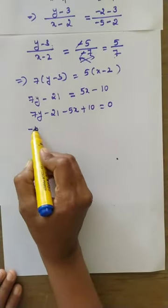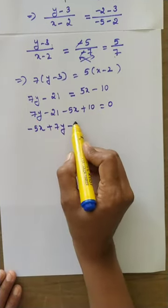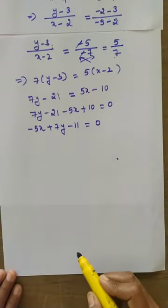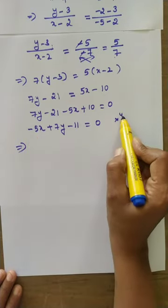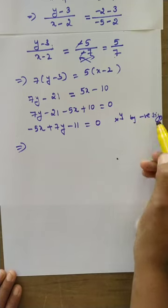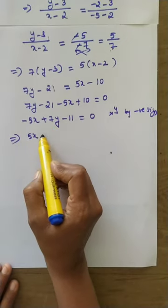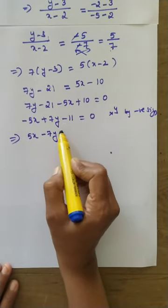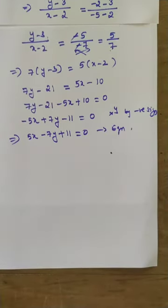Write the x term first, then the y term, then the constant. Minus 21 plus 10 is minus 11. To make x positive, multiply throughout by negative sign — signs change. Minus becomes plus, plus becomes minus. That is the equation of the straight line. This is how to use the equation of straight line passing through two points.